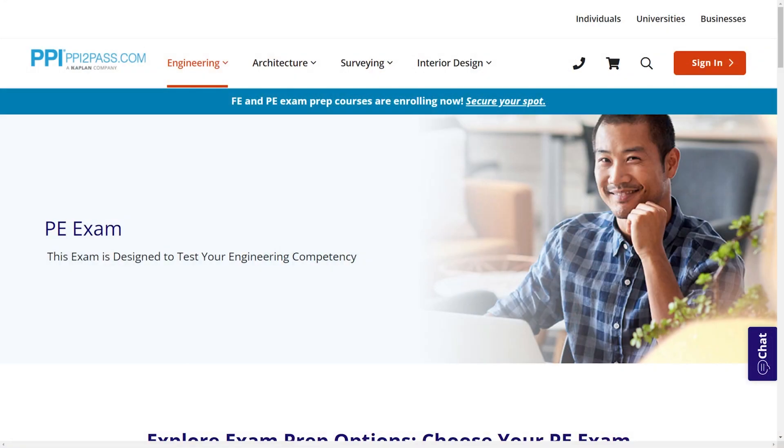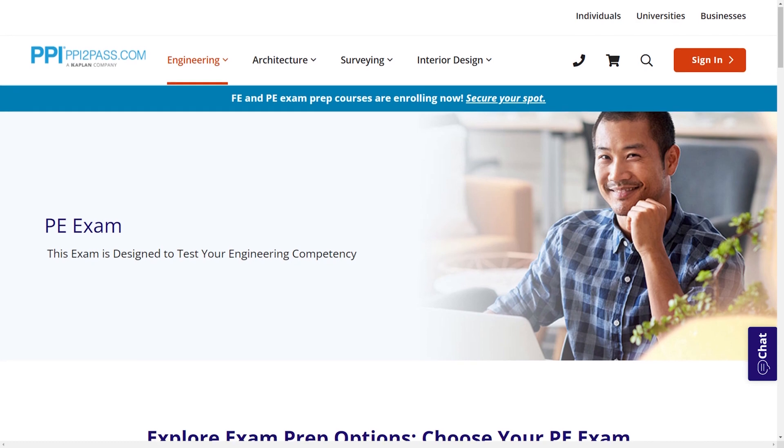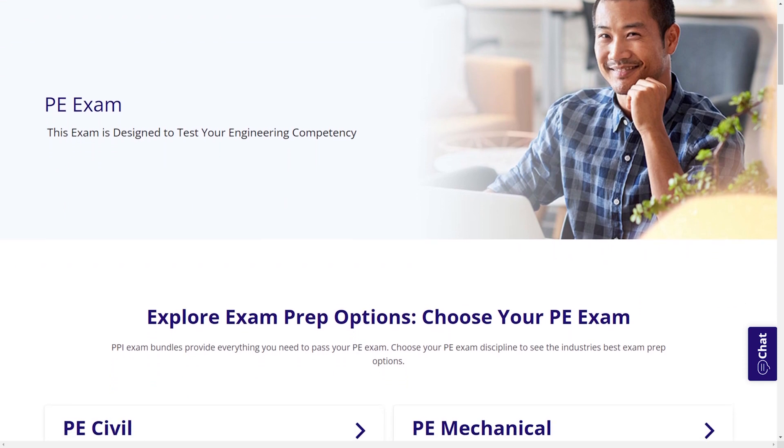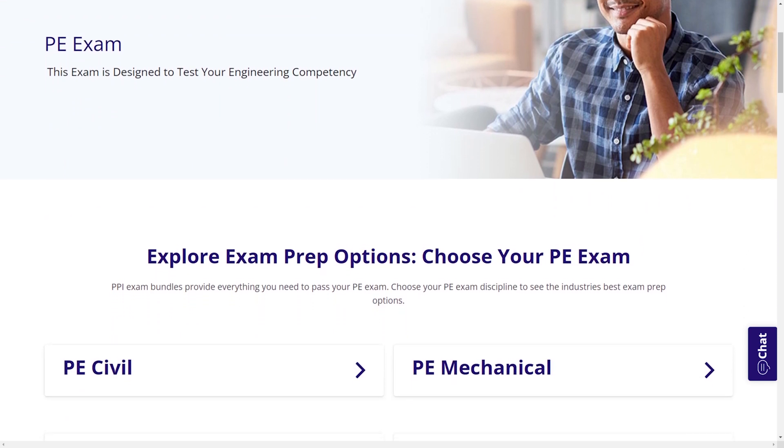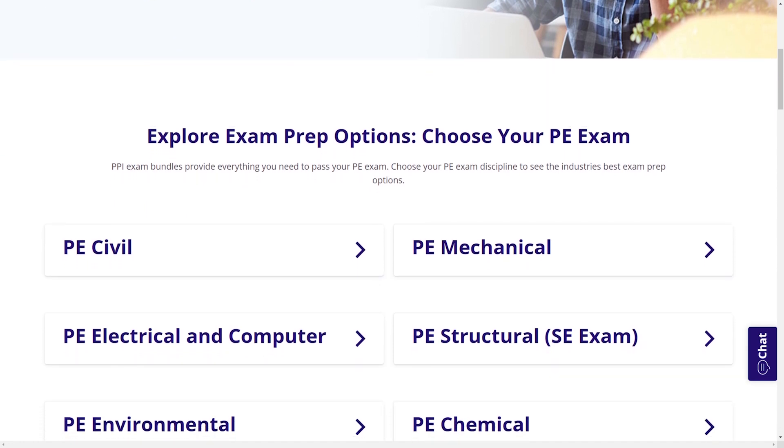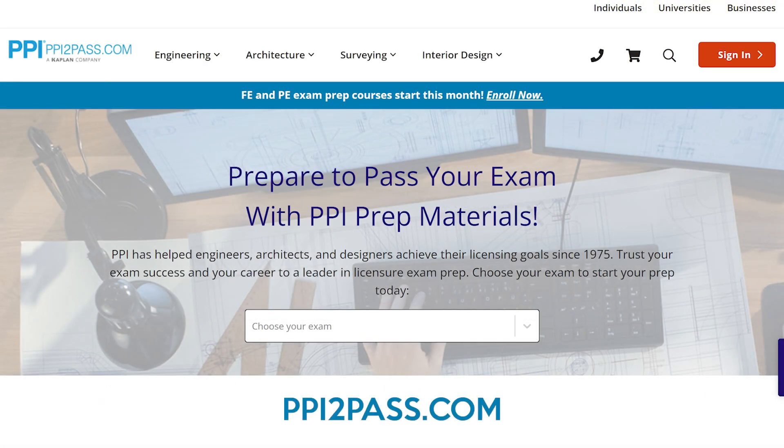When you take a live online course, PPI guarantees you will pass or you can take the on-demand course for free. With study guides, practice exams, and more, the PPI Learning Hub offers digital practice and review that you can take with you anywhere you have a device so that you can prepare during the times most convenient for you.